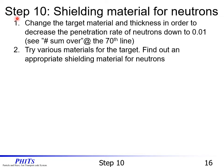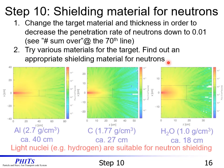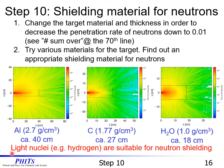Let's go on to Step 10: shielding material for neutrons. First, please change the target material and thickness in order to decrease the penetration rate of neutrons down to 0.01. We can judge neutron shielding from the hash sum over value at line 70 in cross.out. Next, please try various materials for the target and find an appropriate shielding material for neutrons. We show some examples of calculated results. We can confirm that light nuclei are suitable for neutron shielding.